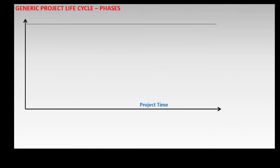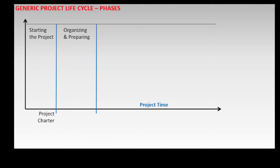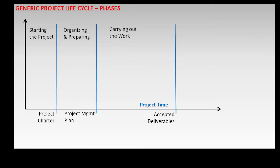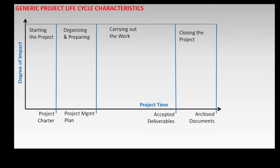The phases of any project can be mapped into the four generic project life cycle phases defined by PMBOK, which are: starting the project, with the output being the project charter; organizing and preparing, with the output being the project management plan; carrying out the work, with the output being accepted deliverables; and closing the project, with the output being archived documents.